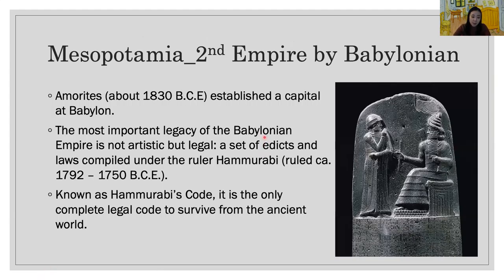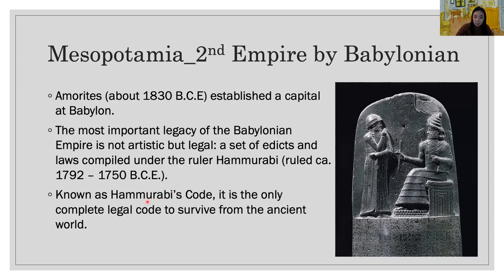The second empire, Babylon: the Amorites consolidated their rule over the region and established a capital at Babylon. The most important legacy of the Babylonian empire is not artistic but legal — a set of edicts and laws compiled under the ruler Hammurabi. Known as Hammurabi's Code, it is the only complete legal code to survive from the ancient world, and it has provided historians with valuable insight into the structure and concerns of Mesopotamian society.